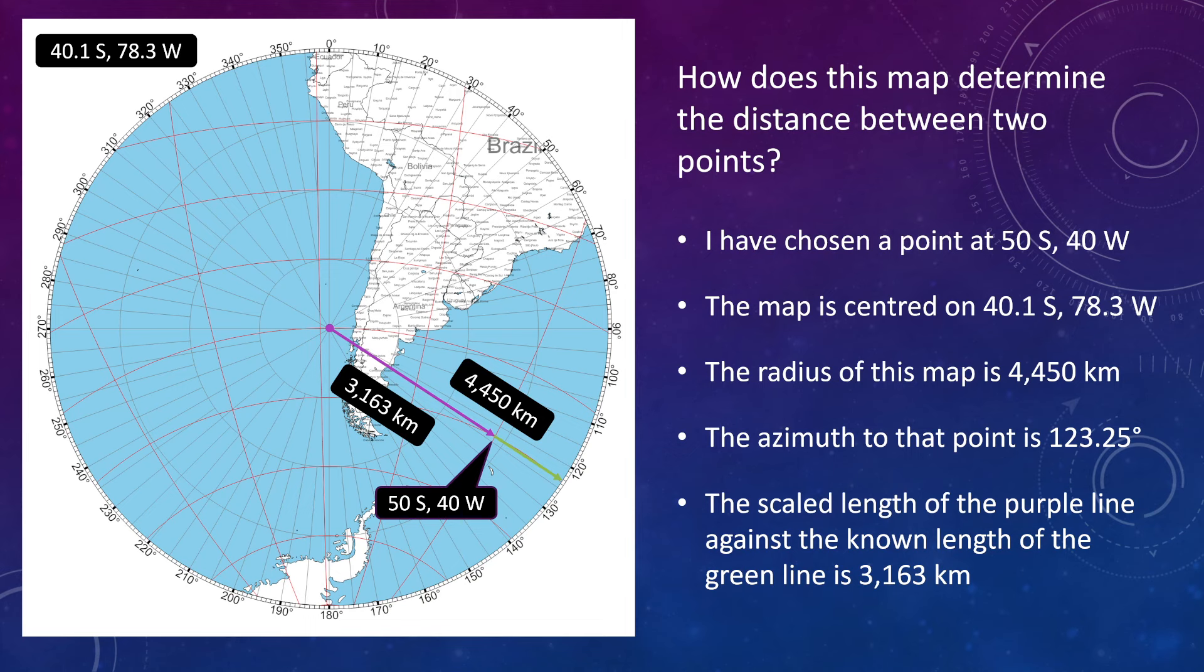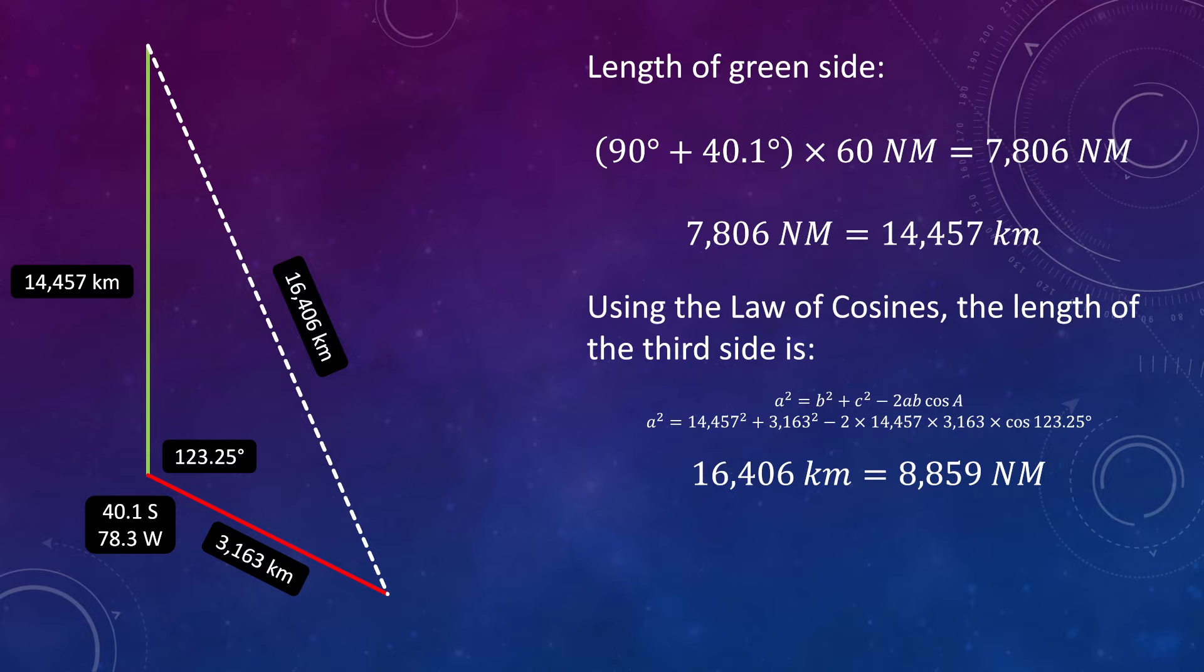So let's check the AE map first. So again, here's our triangle starting at the north pole. We can work out the length of the green side by using the 60 nautical miles per degree of latitude. And it comes out to 7,806 nautical miles or 14,457 kilometers. So again, we can use the law of cosines to solve for the third side. And it comes out to 16,406 kilometers or 8,859 nautical miles. And again, if we divide that by 60 nautical miles to get the degrees of latitude from the north pole, that comes out to 57.65 degrees south latitude.